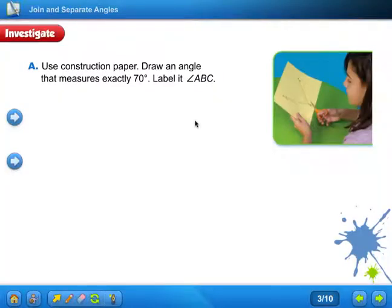This part you're going to kind of have to do on your own. I will walk you through it, but you're going to need an extra piece of paper. So pause right here and go get a scrap piece of paper, and you can do it with me. Now that you have your paper, and you're going to need a protractor, draw an angle that measures exactly 70 degrees.